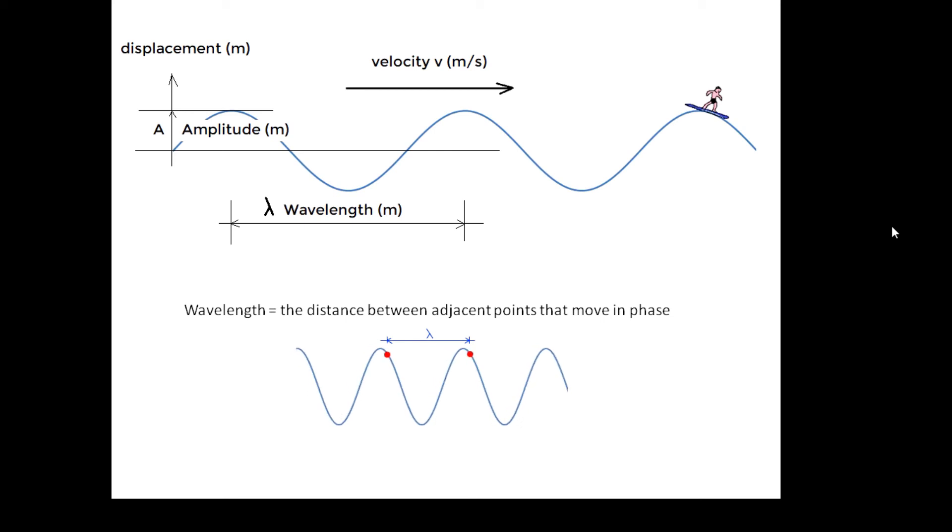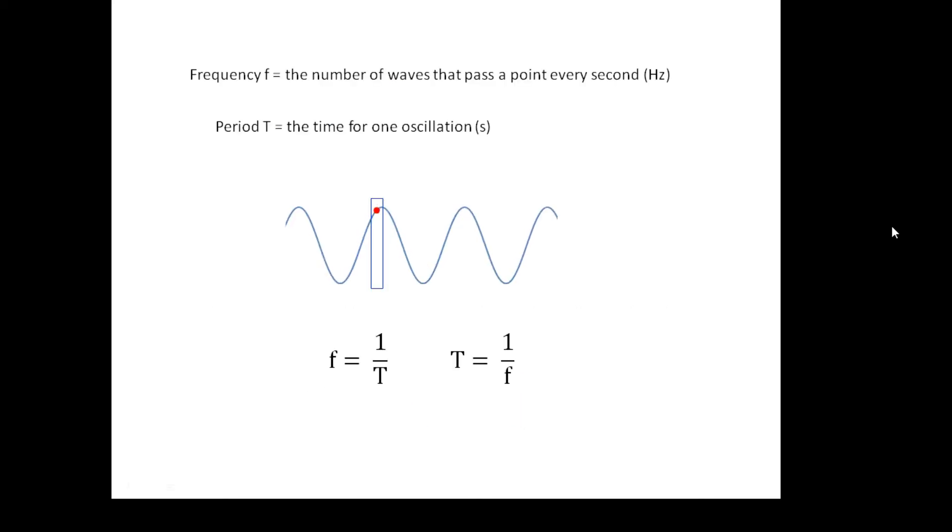The frequency is the number of waves that pass a point every second, measured in Hertz. The period T is the time for one oscillation, which is the reciprocal of frequency: f equals 1 over T, and T equals 1 over f.